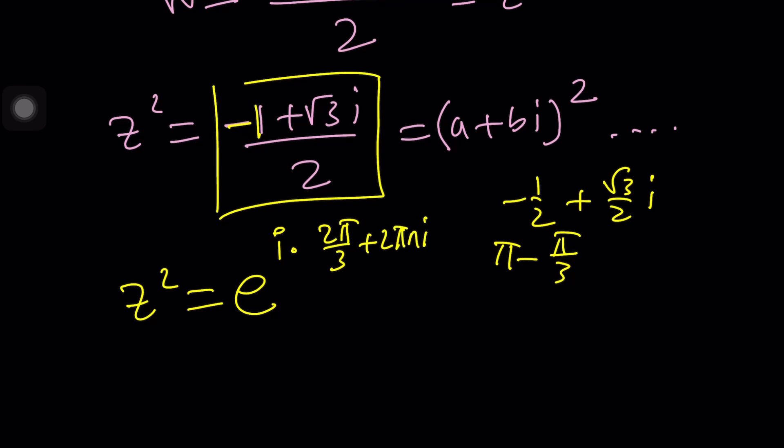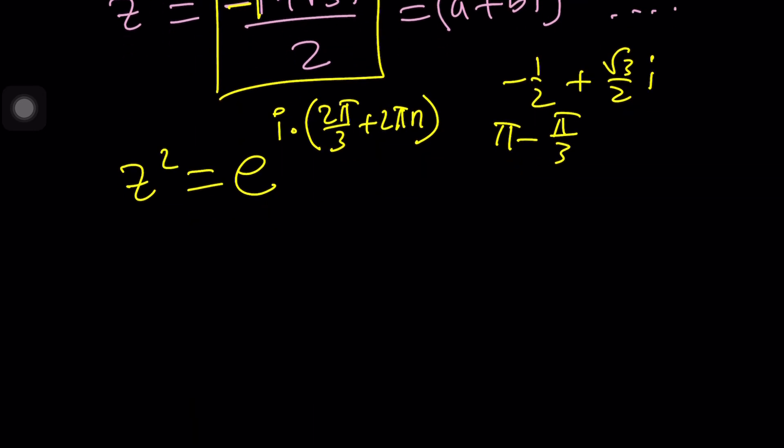If you take the square root, it's fairly easy in the exponential form. All you have to do is cut the angles in half. It's going to give you pi over three plus pi n. n is an integer, so n can be zero or n can be one.